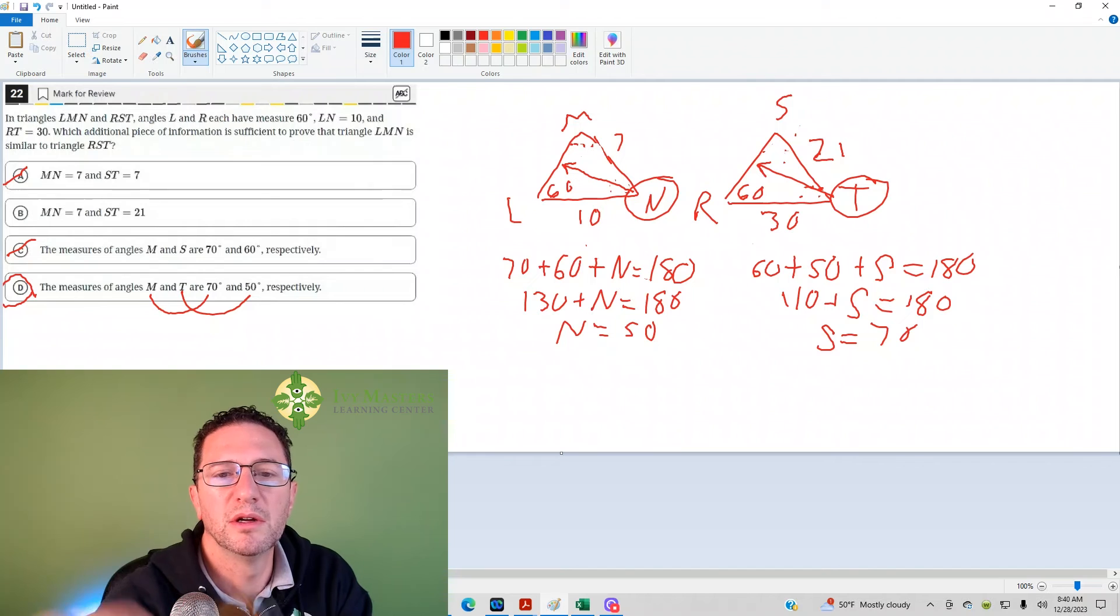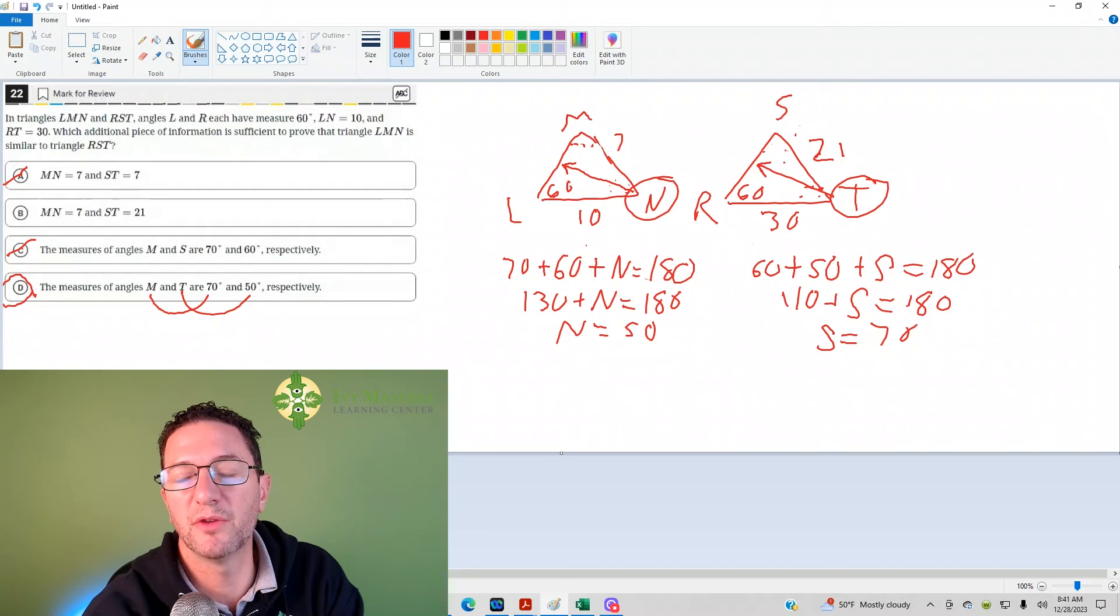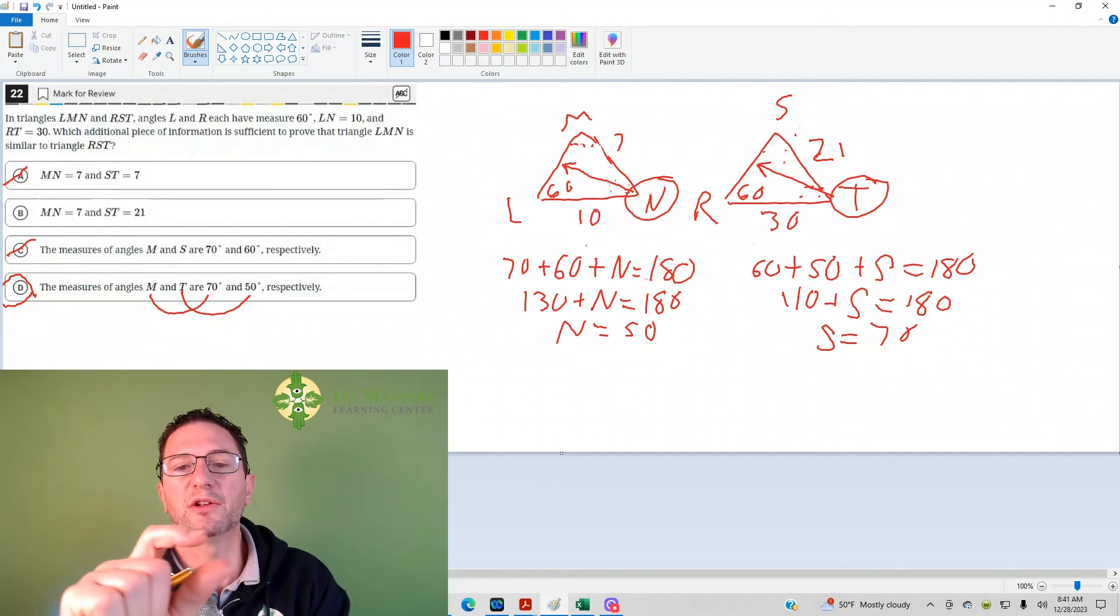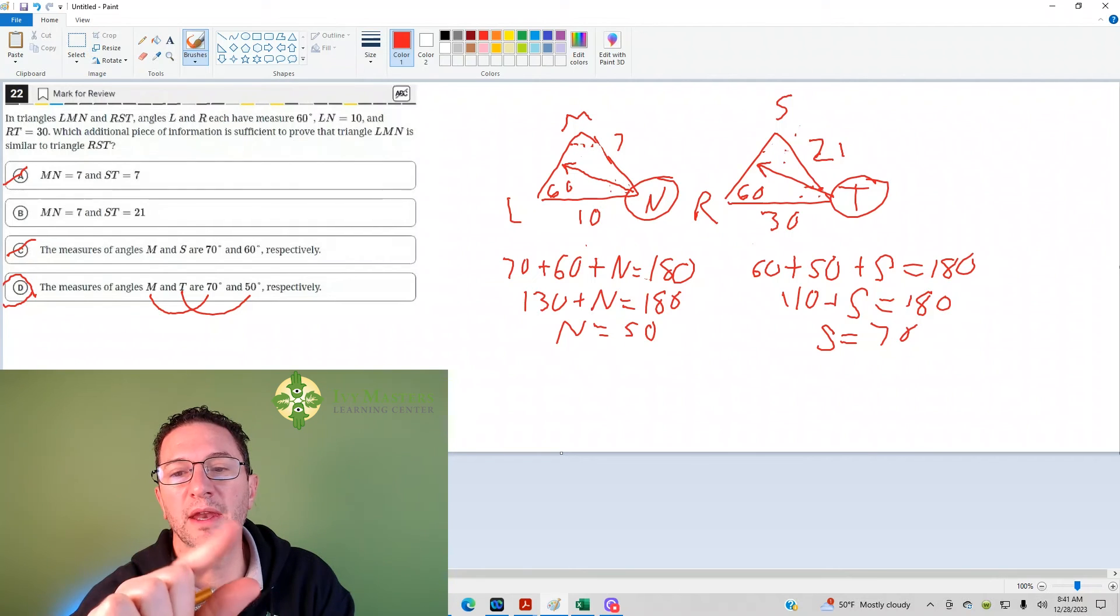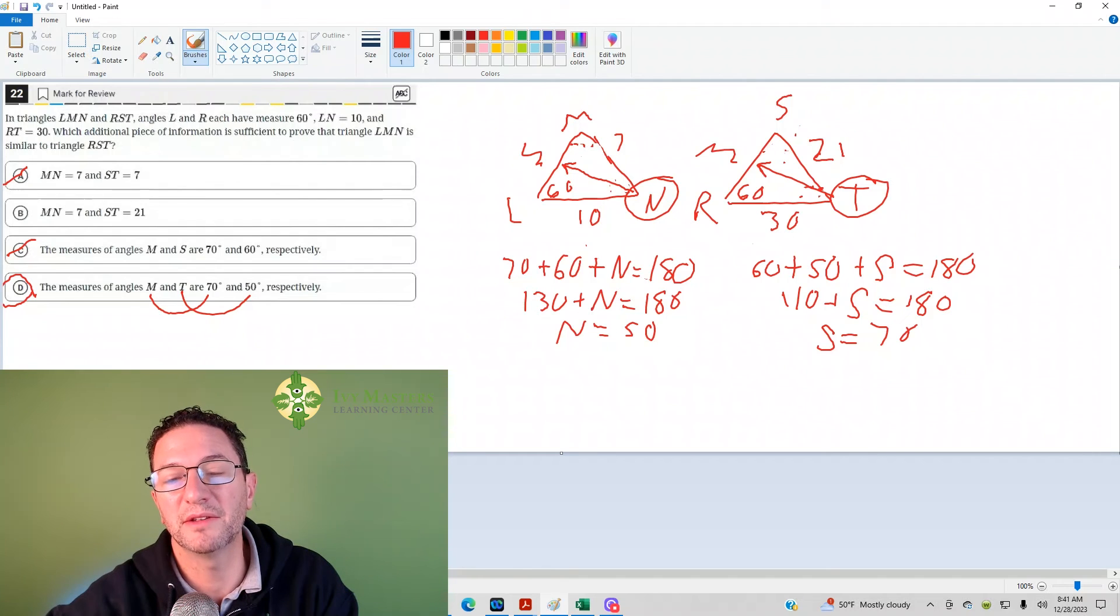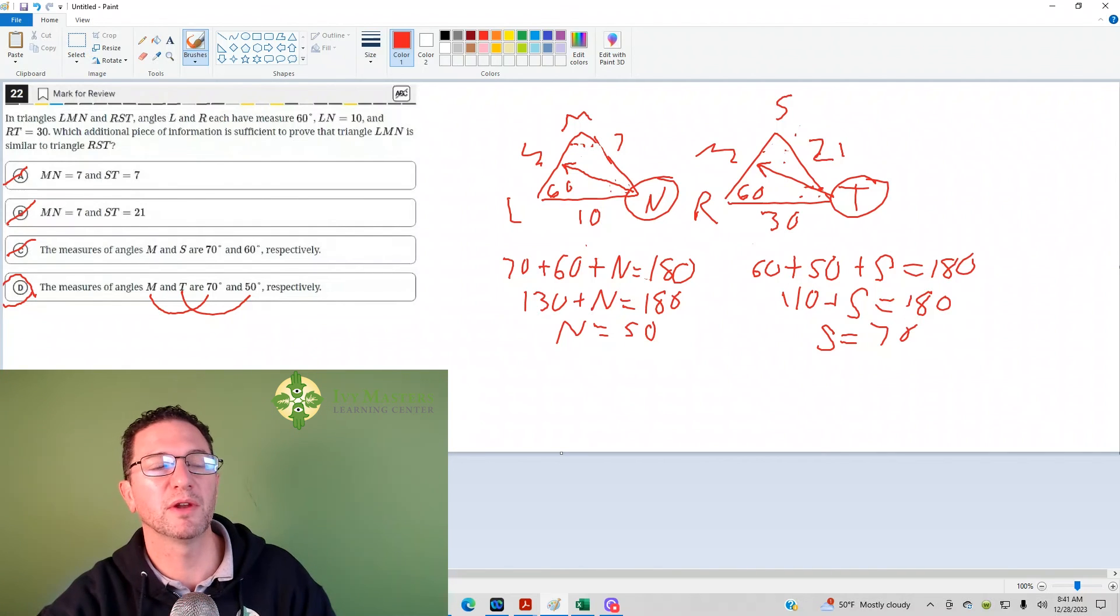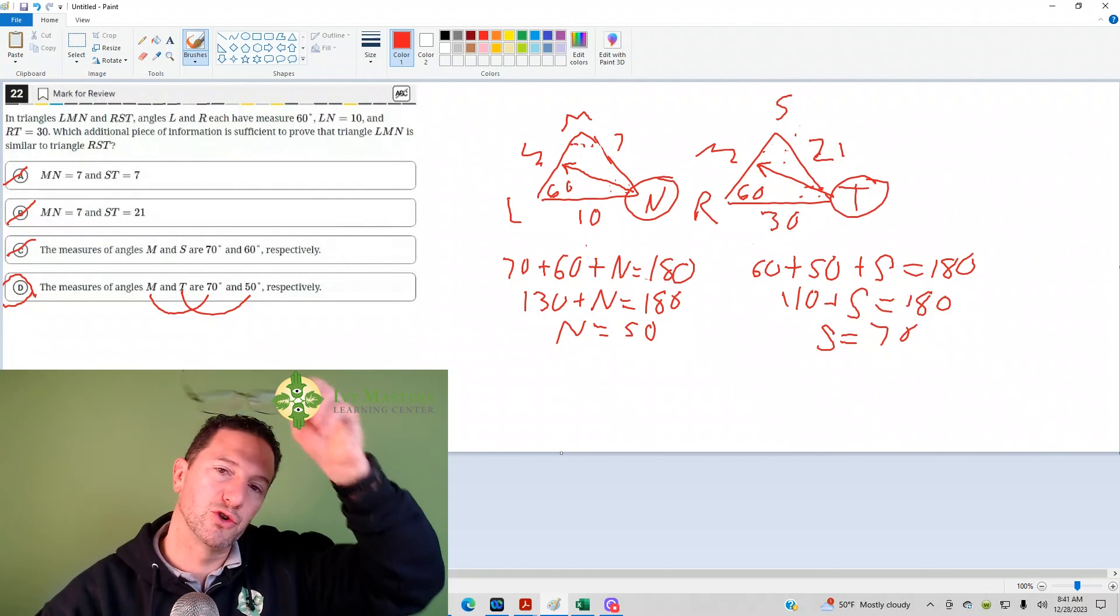So you could have a scenario where L and R are both 60 degrees. LN and RT have a scale factor of 3. MN and ST also have a scale factor of 3. But you could have that angle N be a little more narrow than angle T or a little wider than angle T. And in which case, this resulting side, LM over here and RS over here, they are not going to have that scale factor of 3. So anyway, B is wrong. If all the corresponding angles are equal, then you definitely have your answer. D is the correct answer for 22.